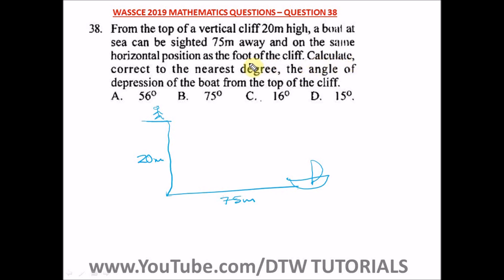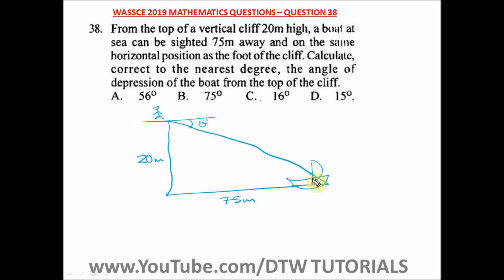Calculate, correct to the nearest degree, the angle of depression of the boat from the top of the cliff. So this is our cliff, the person sees the boat this way, and this is our angle of depression theta — that's what we are looking for. Using alternate angles, this angle at the top equals this angle at the base, so we solve for theta.